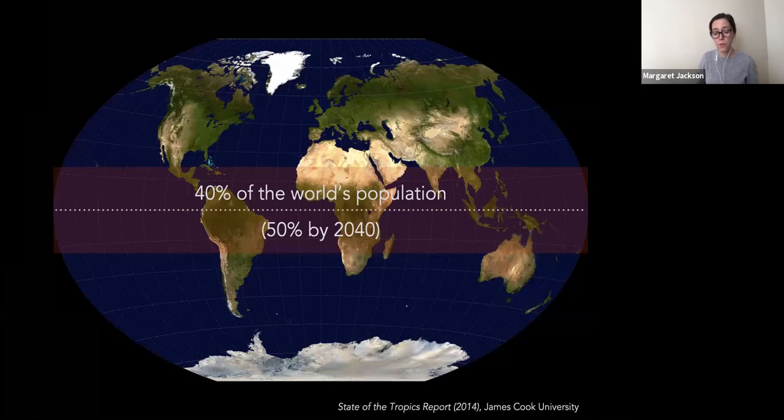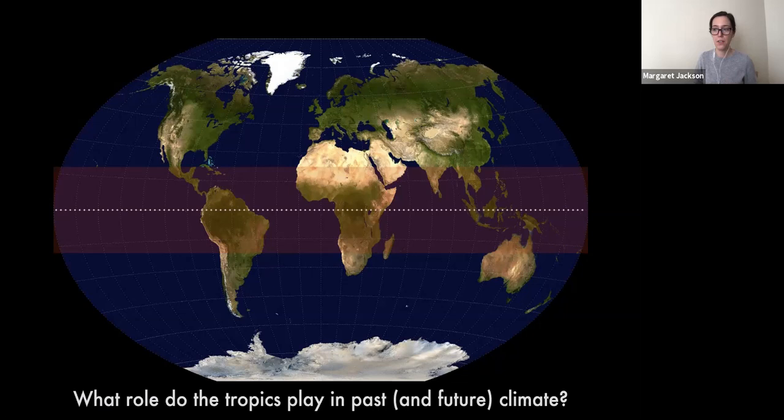The tropics are also where people live. Today, over 40% of the world's population live in the low latitudes, and this percentage is only expected to rise in the coming decades. The fundamental question is what role the tropics may play in both past and future climate change.